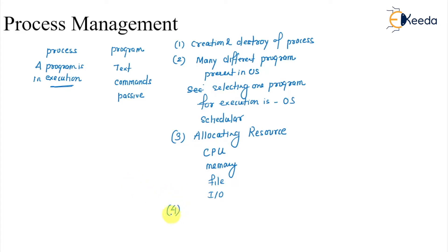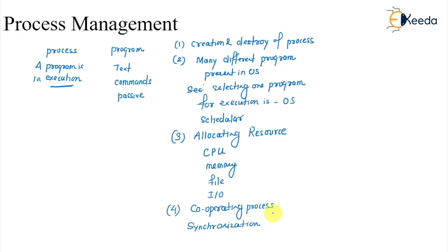The fourth term in process management involves cooperating processes — processes that cooperate with each other. These cooperating processes need synchronization. Providing tools and support for synchronization is another responsibility of process management.